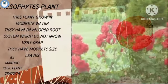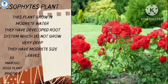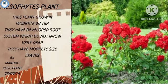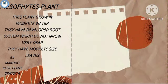Second is mesophyte plants. These plants grow in moderate water. They have well-developed roots. Examples: mango, rose plant, and brassica.